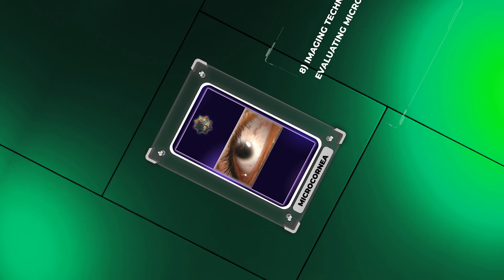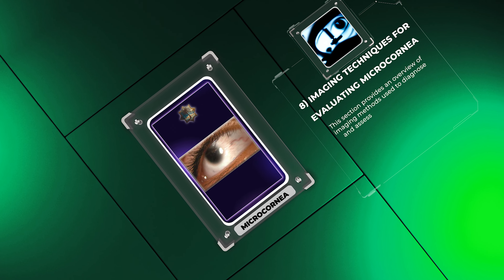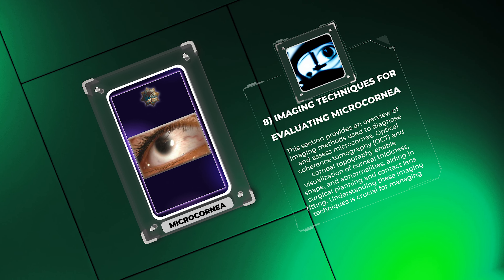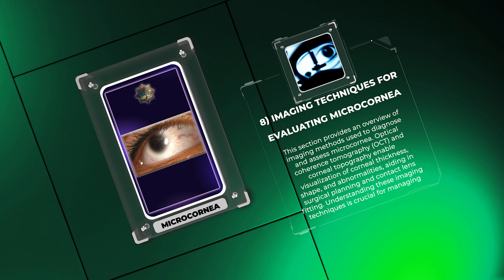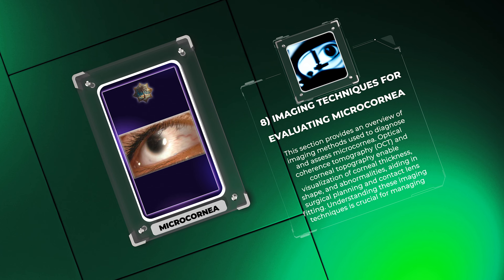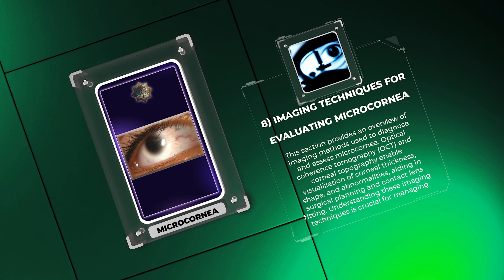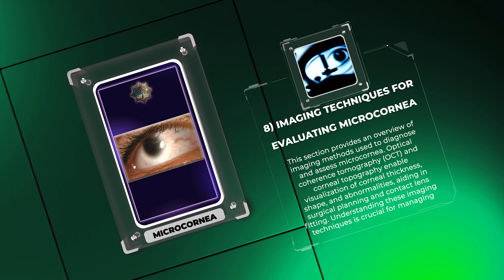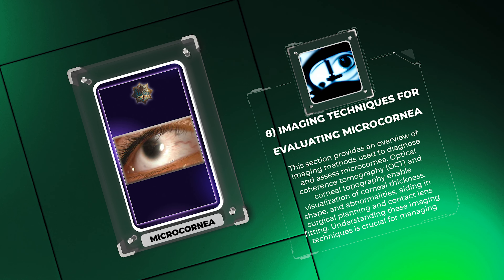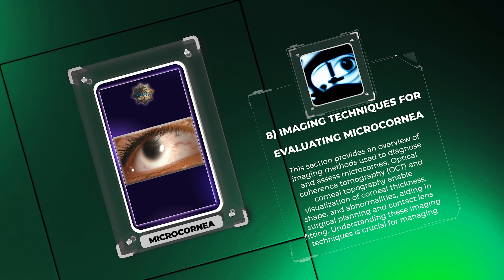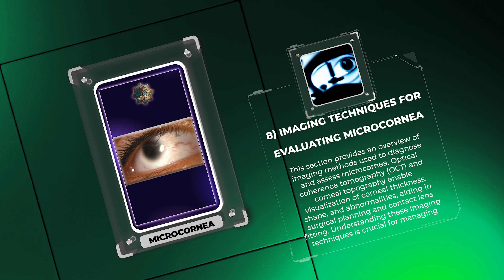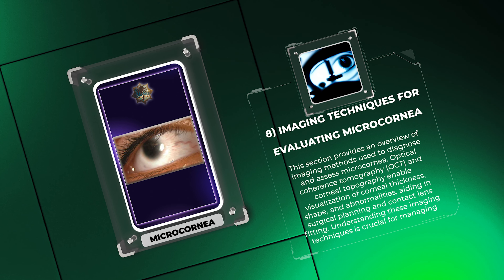This section provides an overview of imaging methods used to diagnose and assess microcornea. Optical coherence tomography (OCT) and corneal topography enable visualization of corneal thickness, shape, and abnormalities, aiding in surgical planning and contact lens fitting. Understanding these imaging techniques is crucial for managing microcornea effectively.